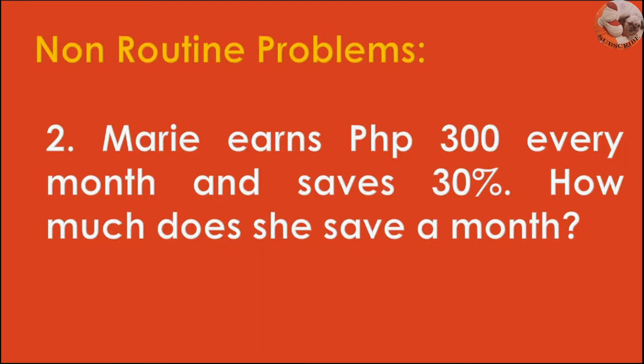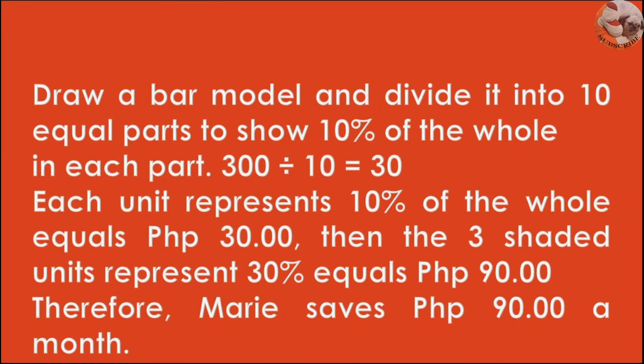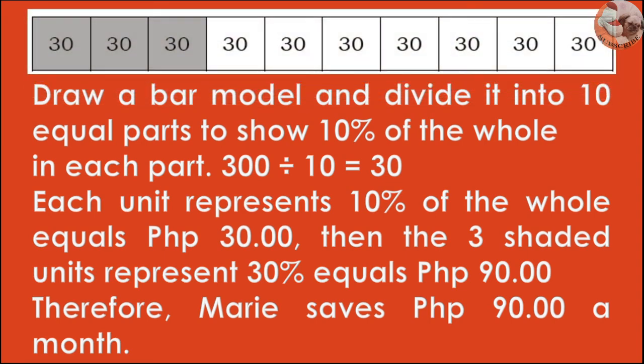Problem number two: Marie earns 300 pesos every month and saves 30%. How much does she save a month? Draw a bar model and divide it into 10 equal parts to show 10% of the whole in each part. 300 divided by 10 equals 30. Each unit represents 10% of the whole and equals 30 pesos. The three shaded units represent 30%, which equals 90 pesos. Therefore, Marie saves 90 pesos a month.